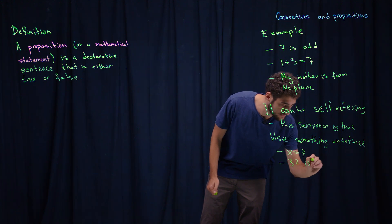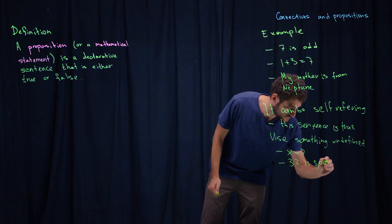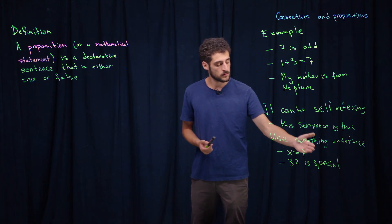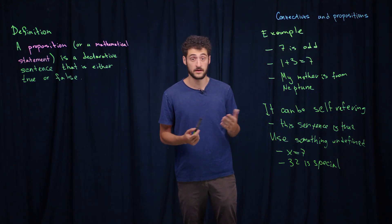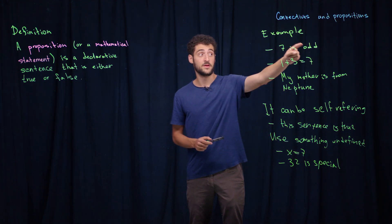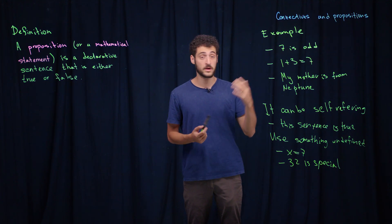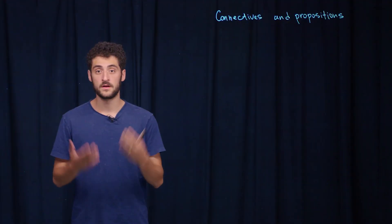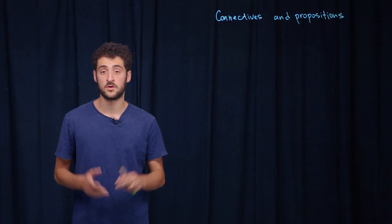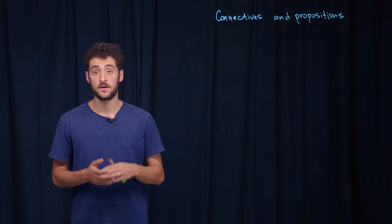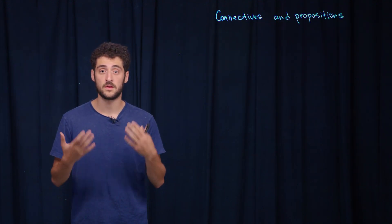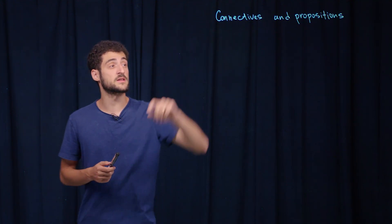Or it may be something like '32 is special.' We use the word 'special' and we don't know what it means in mathematics, so we cannot say if it's true or false. Note that the word 'odd' is a mathematical term, so we can use it. In everyday speech we quite often construct complicated sentences from simpler ones — in mathematics we do the same. We use simple mathematical statements to construct more complicated ones, and to do this we use connectives.